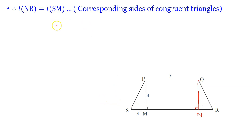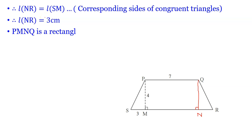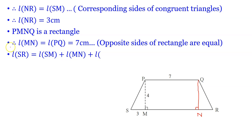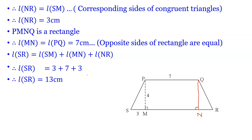Since PMQN is a rectangle, MN = PQ = 7 cm (opposite sides of the rectangle are equal). SM = 3, MN = 7, NR = 3. Therefore SR = SM + MN + NR = 3 + 7 + 3 = 13 cm.